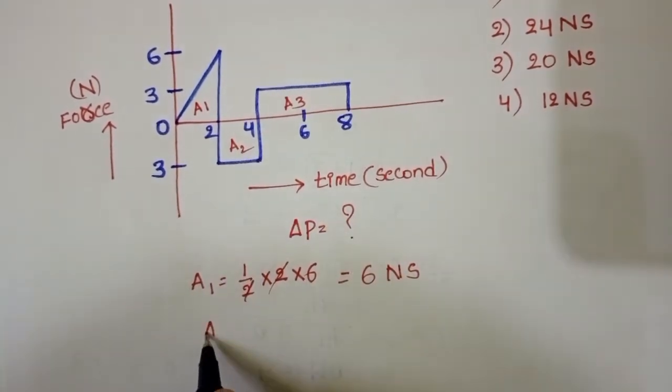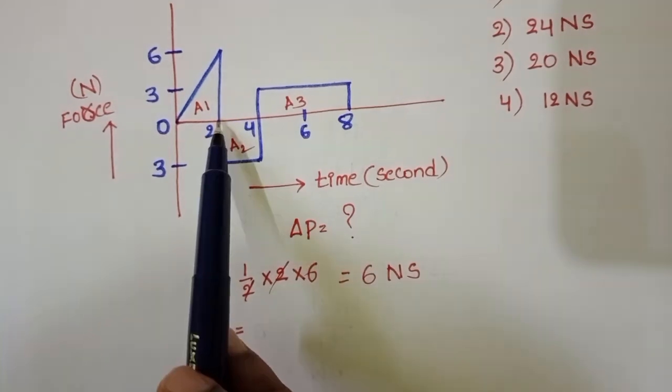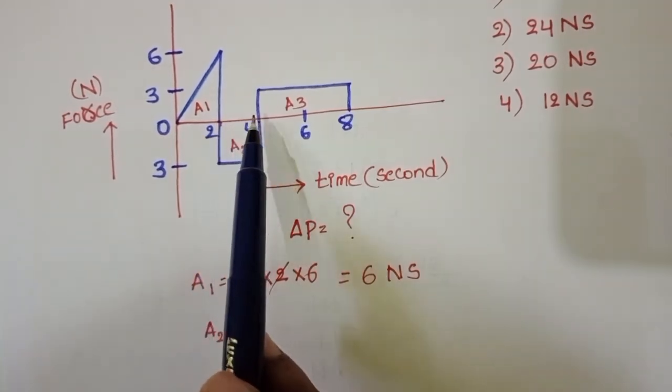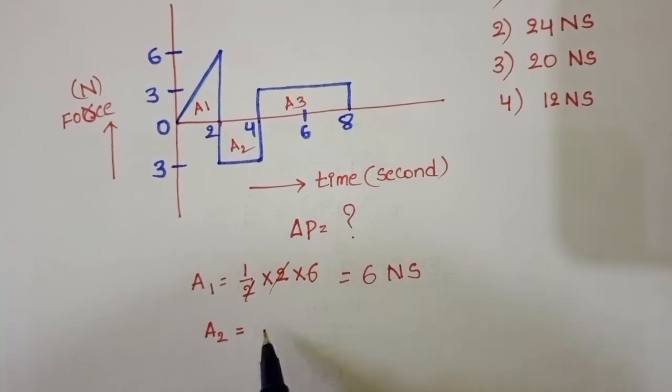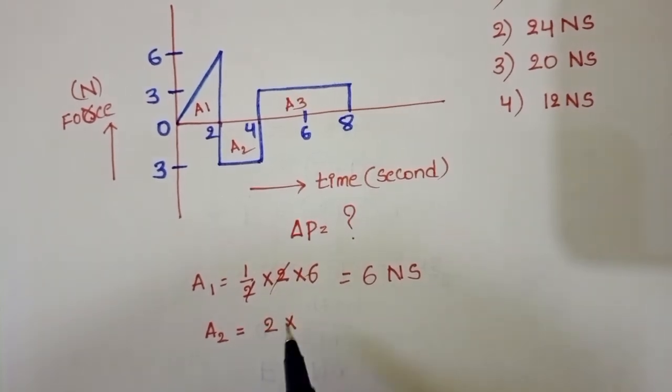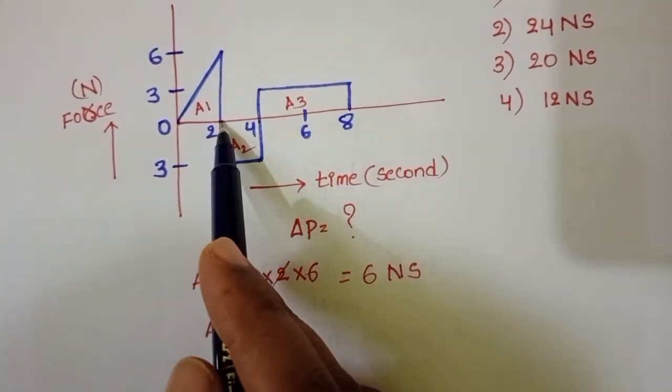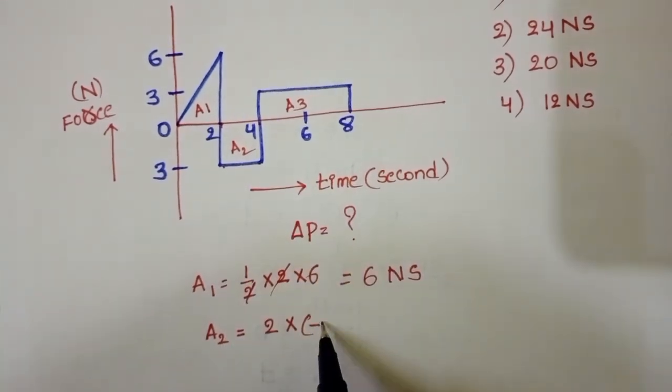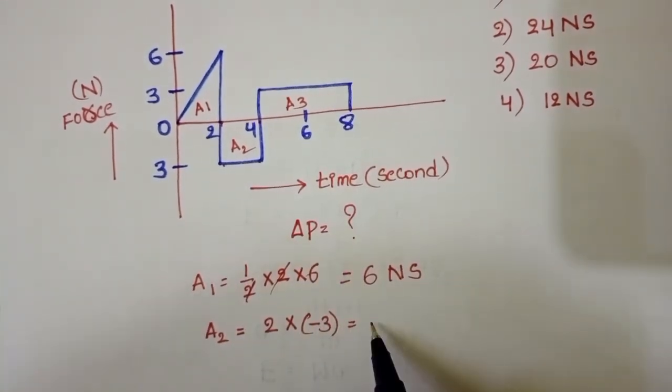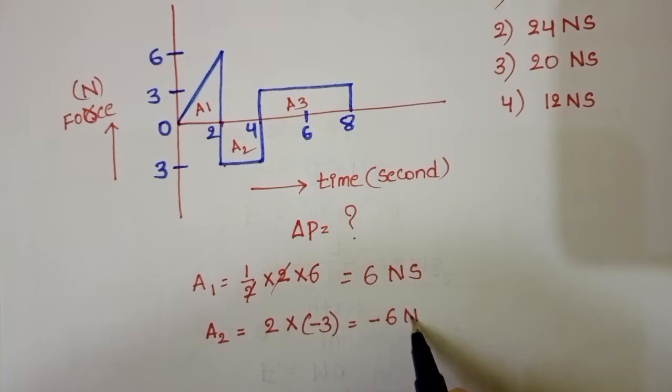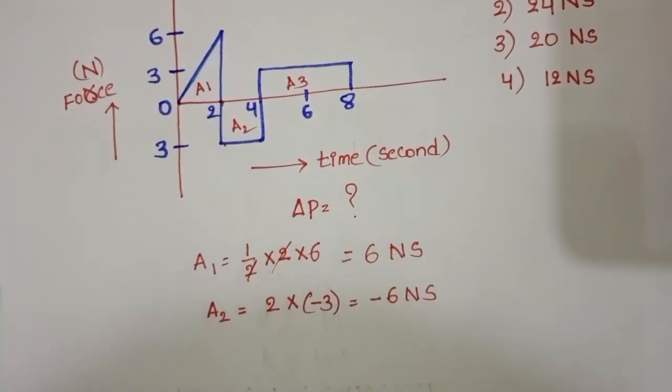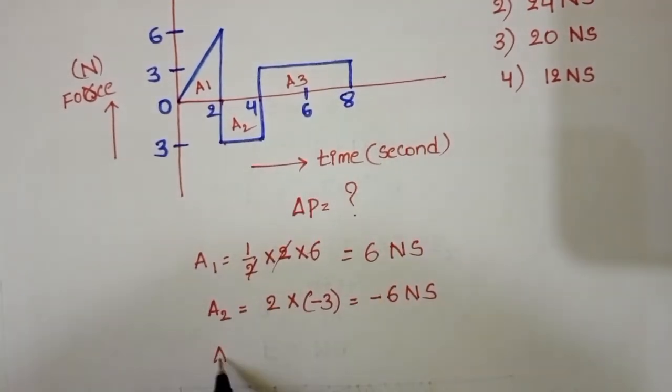A2 equals, time is 2 to 4 seconds, so 4 minus 2 equals 2 into force is 0 to minus 3 Newton. A2 equals minus 6 Newton seconds.